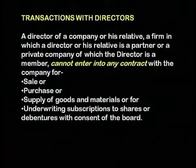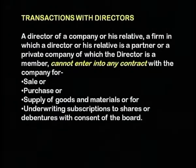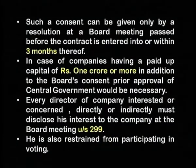Some transactions with directors require emphasis and vouching by the auditor. The director of a company, his relative, a firm in which a director or his relative is a partner, or a private company of which the director is a member, cannot enter into any contract with a company for the sale, purchase, or supply of goods and materials, or for underwriting subscriptions to shares or debentures, without the consent of the board. Such sanction must be received within three months of the transaction being entered into, or prior to entering the transaction.